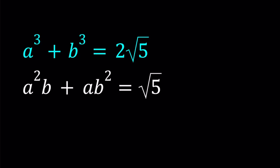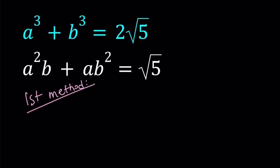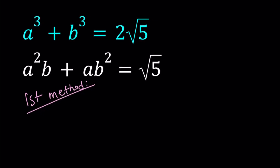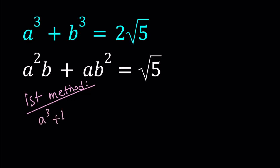I'll be presenting two methods. Let's go ahead and start with the first one. For my first method, I'm going to factor a³ + b³. Obviously, this is something we can do. a³ + b³ can be written as (a+b)(a² - ab + b²), and we know that equals 2√5.